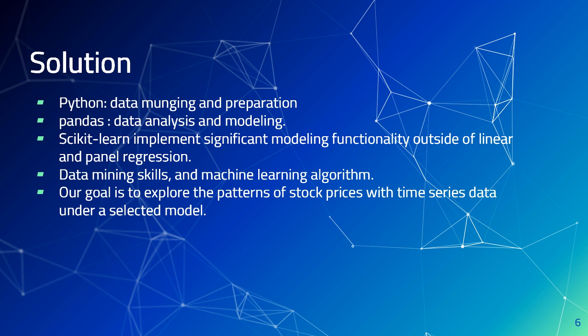First, we will make a comparison among four machine learning classification models: linear regression, polynomial regression, radial basis function, and the sigmoid logistic function. Then we will select the appropriate one. After that, we will train the data with the appropriate model during the predicting process.